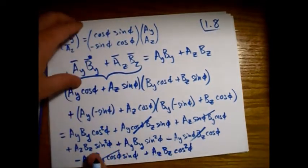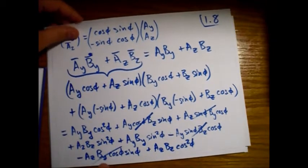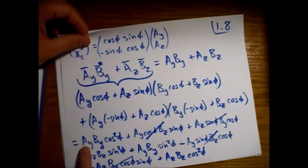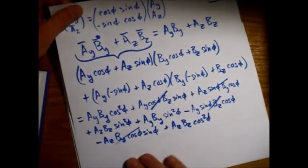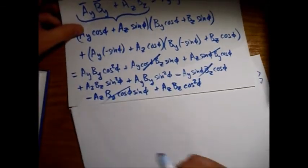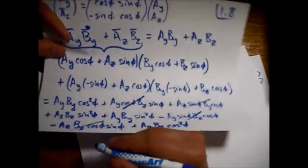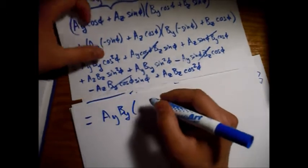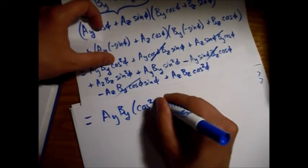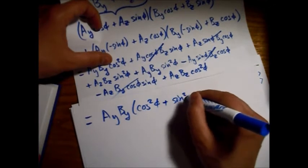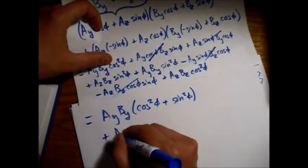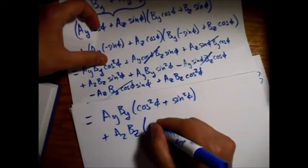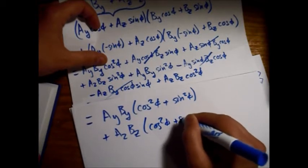And now we can combine terms with the sine squared. Or, well, let's do it with the, just for the heck. We'll just gather the A_y B_y terms together and the A_z B_z terms. So, A_y B_y. And then we have cosine squared φ plus sine squared φ. Plus A_z B_z. Same thing. Cosine squared φ plus sine squared φ.